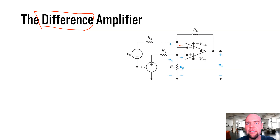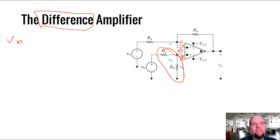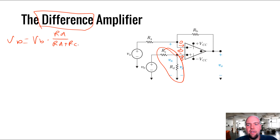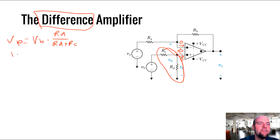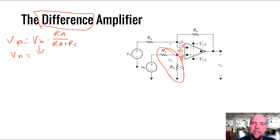Write the simplifying assumptions: no current, no voltage drop. What's the voltage of the positive terminal? We've got something going on now - VB is connected through a voltage divider. So the voltage of the positive terminal, based on the voltage divider equation, is VB × RD / (RD + RC). Assuming our op amp is working correctly, that equals the voltage of the negative terminal. So the voltage at the negative terminal is VB × RD / (RD + RC).